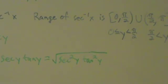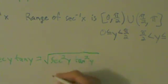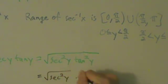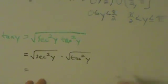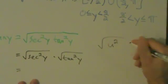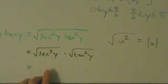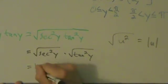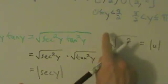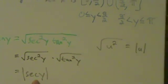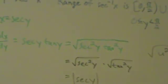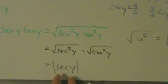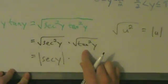Let's split this up into a product of two square roots: the square root of secant squared y times the square root of tangent squared y. In general, the square root of u squared is the absolute value of u. So the square root of secant squared y is the absolute value of secant y. We need these absolute values because secant could be positive or negative depending on the quadrant, even though the product secant times tangent is always non-negative.